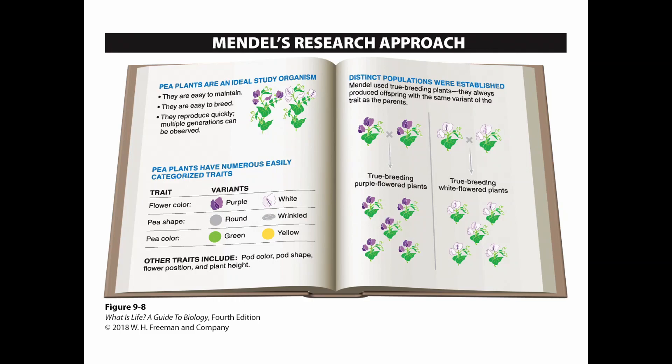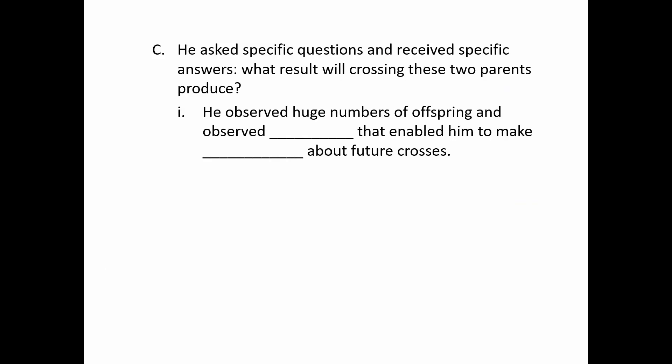He could create populations that were distinct — the true breeding plants meaning that anytime he bred purple flowers, he would get only purple flowers for offspring, and anytime he bred white flowers, he would only get white flowers. He asked very specific questions and got very specific answers. He saw very particular patterns that allowed him to make predictions about future crosses he had not even made yet.